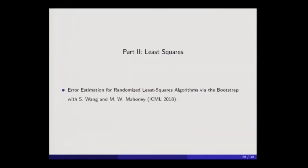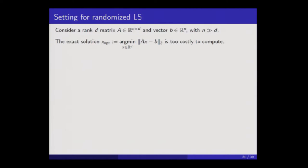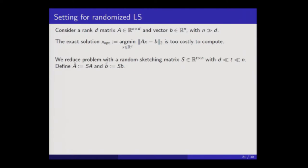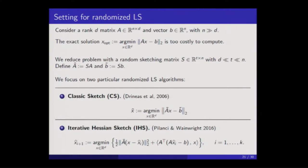Now for least squares, based on work that appeared last year at ICML. I consider an N by D matrix A of rank D, where the number of rows is very large compared to the number of columns. I'd like to compute the exact least squares solution but it's too expensive, so I'll work with sketches — A-tilde and a vector B-tilde. I'll be dealing with two different kinds of sketching algorithms: the sketch-and-solve, or classic sketch algorithm; and the iterative Hessian sketch algorithm, which is akin to a quasi-Newton method. One is iterative, one is one-shot, but the bootstrap can be successfully applied to either.